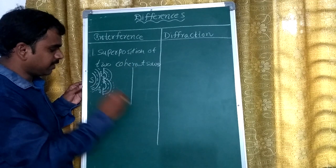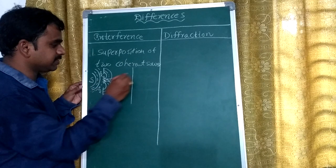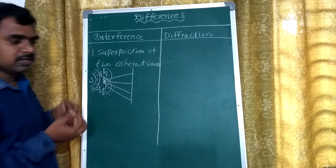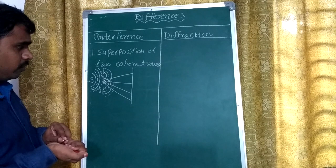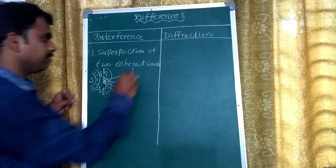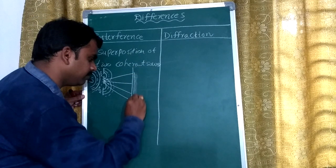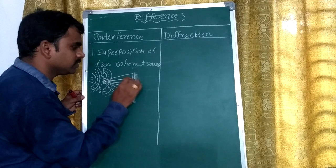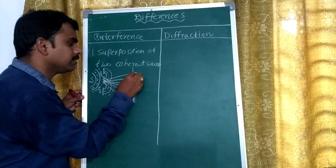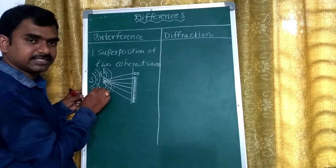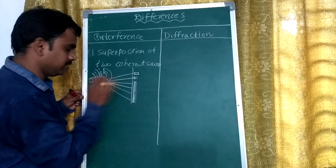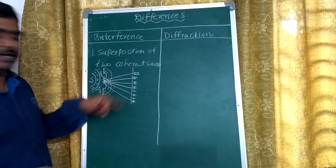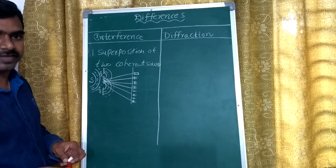Due to that, on the screen we can get different intensities — alternate intensities. We may get maximum intensity at the center. From that, we can observe fringes, and those fringes are rectangular-shaped fringes because we are taking a rectangular shape. We can get alternate bright and dark bands or fringes.